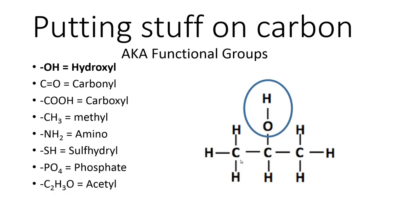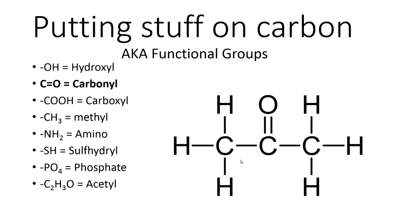Our next functional group is a carbon double bonded to an oxygen — this is called a carbonyl. Here we see an example of a molecule that contains a carbonyl. Notice this is also a three-carbon molecule. All we've done is replaced what's attached to that central carbon from the hydroxyl in the previous molecule to a carbonyl here, but this has changed the molecule from isopropyl alcohol, or rubbing alcohol, to acetone, or fingernail polish remover. So changing the functional group from the hydroxyl to the carbonyl drastically changes the characteristics of that molecule.